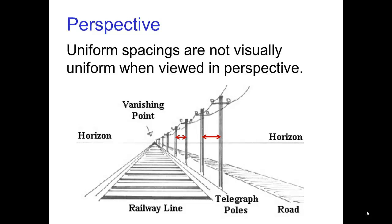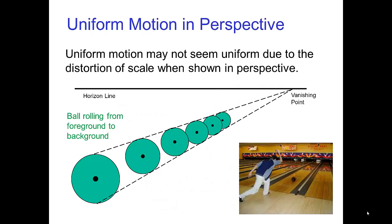When thinking about motion, remember that uniform spacings are not visually uniform when viewed in perspective, as with the spacings between these telegraph poles. Uniform motion may not seem uniform due to the distortion of scale when shown in perspective.